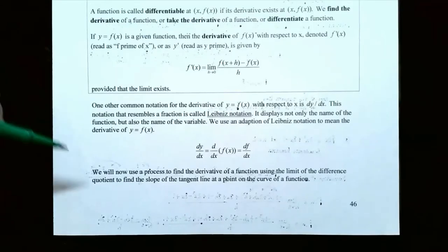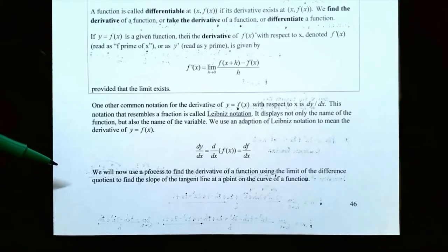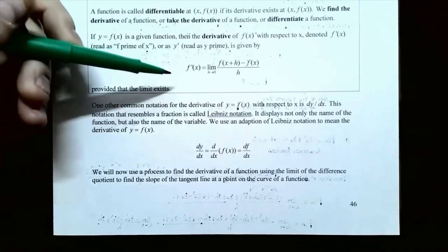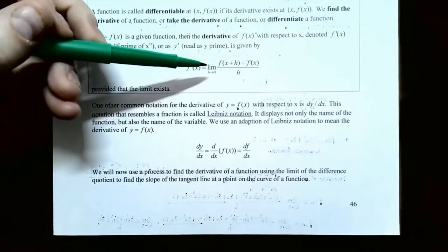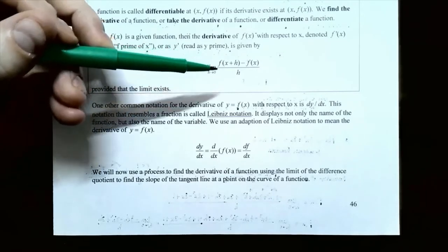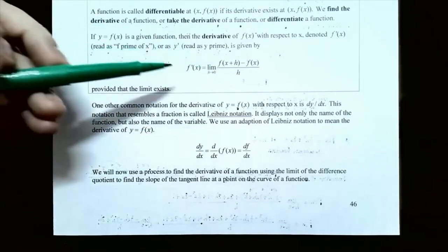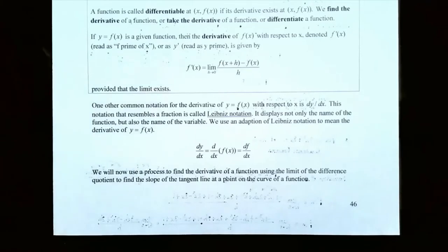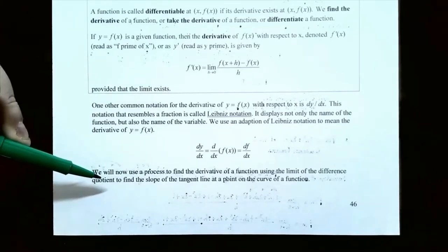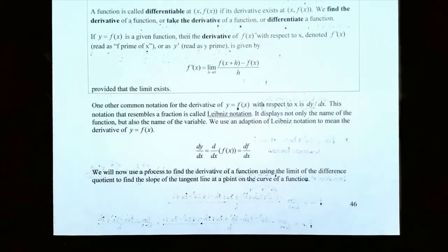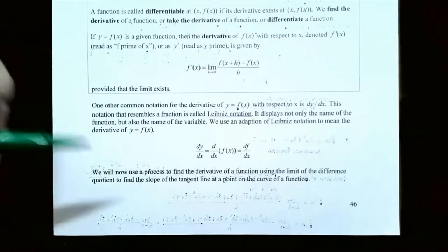Let's pick up where we left off in the previous video. We talked about calculating the derivative using the limit of the difference quotient. So we have this definition: f prime of x is the limit as h approaches 0 of f of x plus h minus f of x, all divided by h. We'll use this definition to calculate the derivative and then use it to find the slope of a tangent line at a point on the curve.